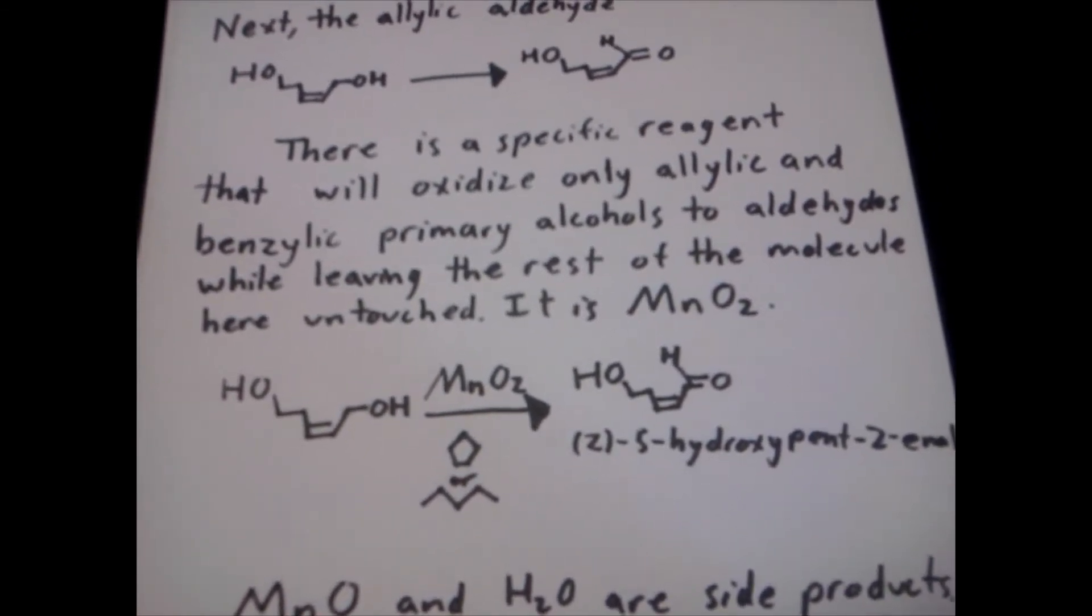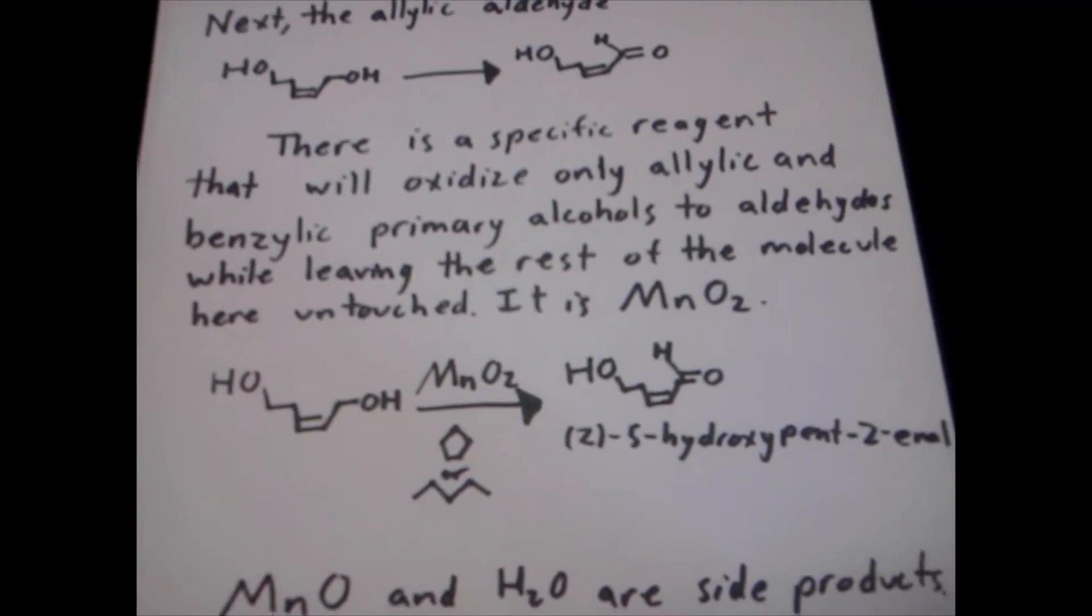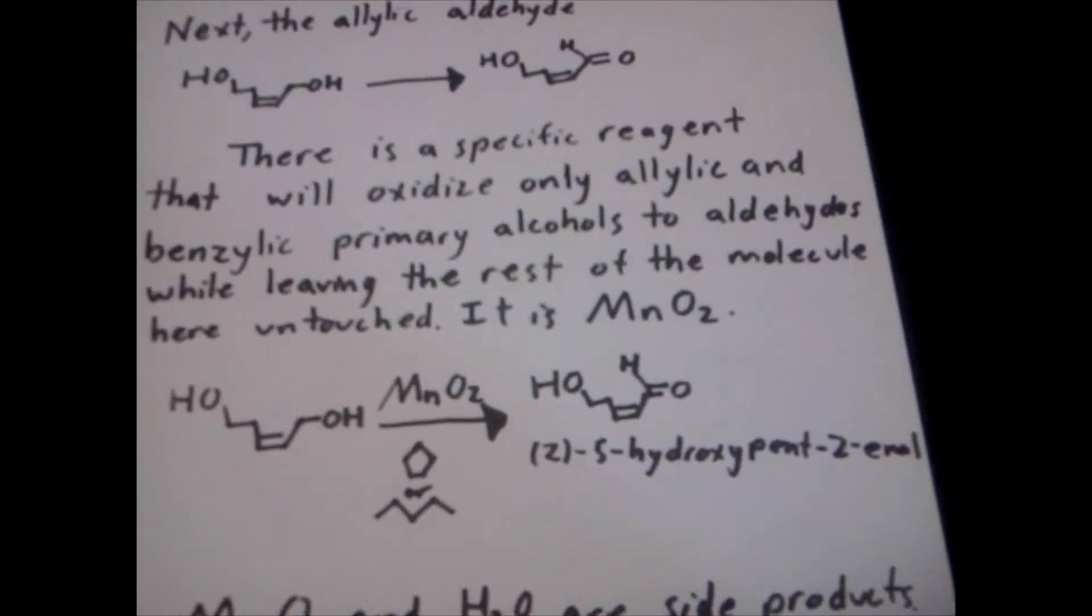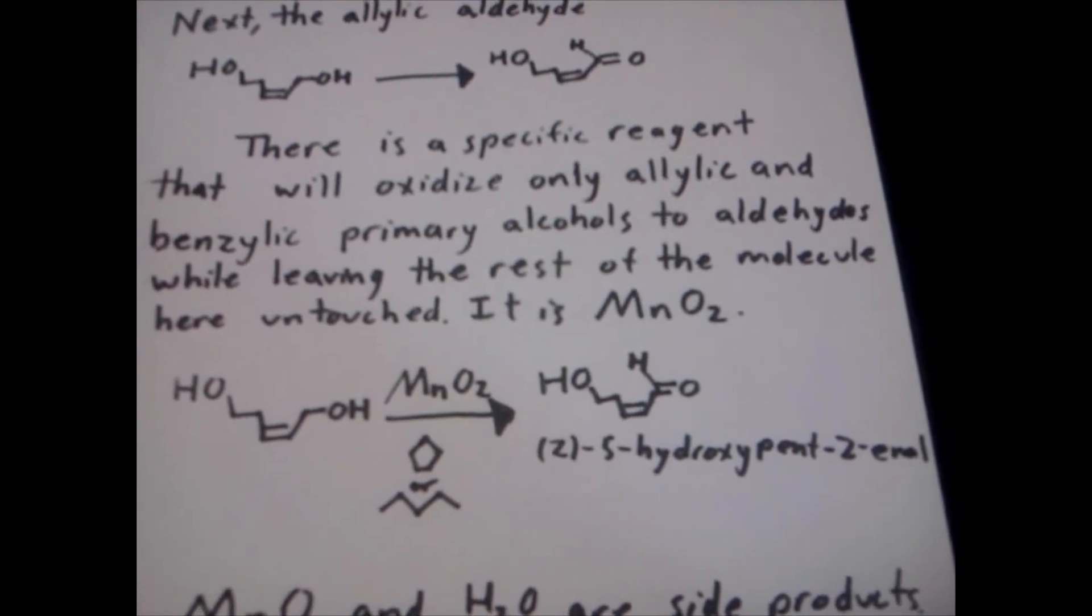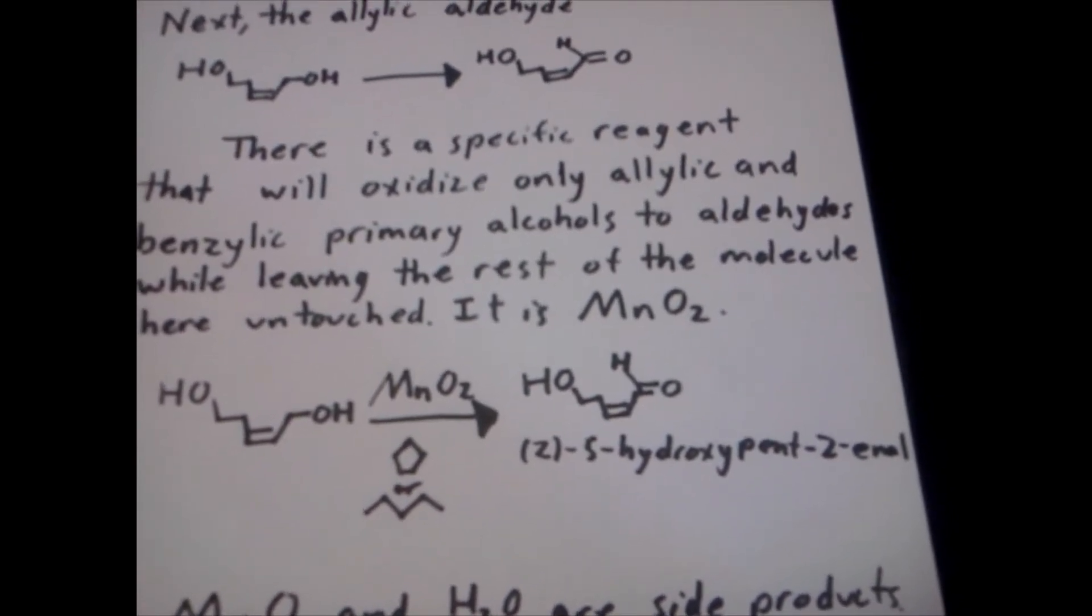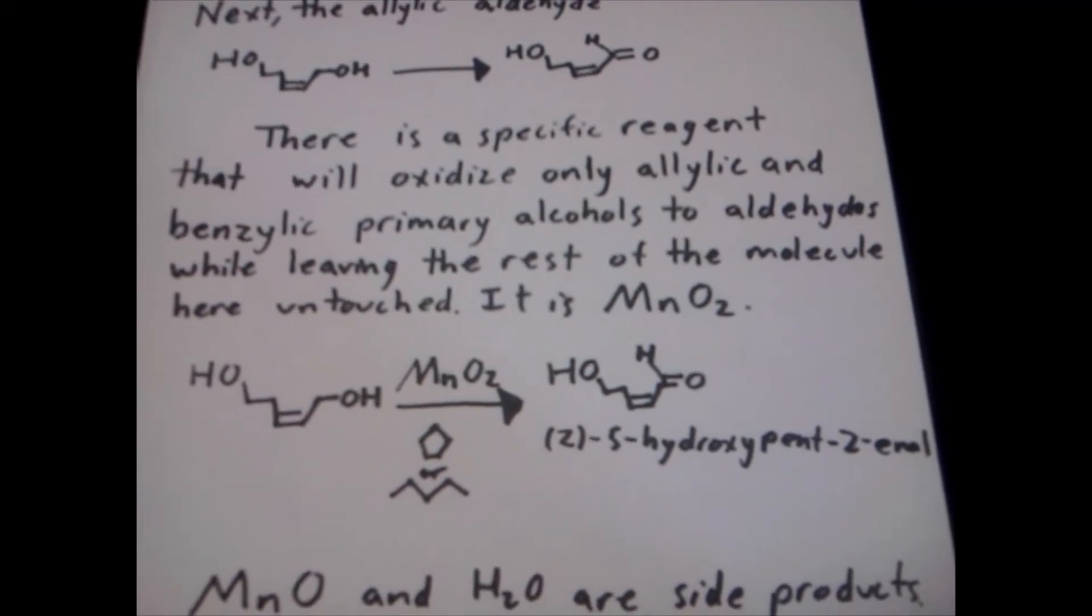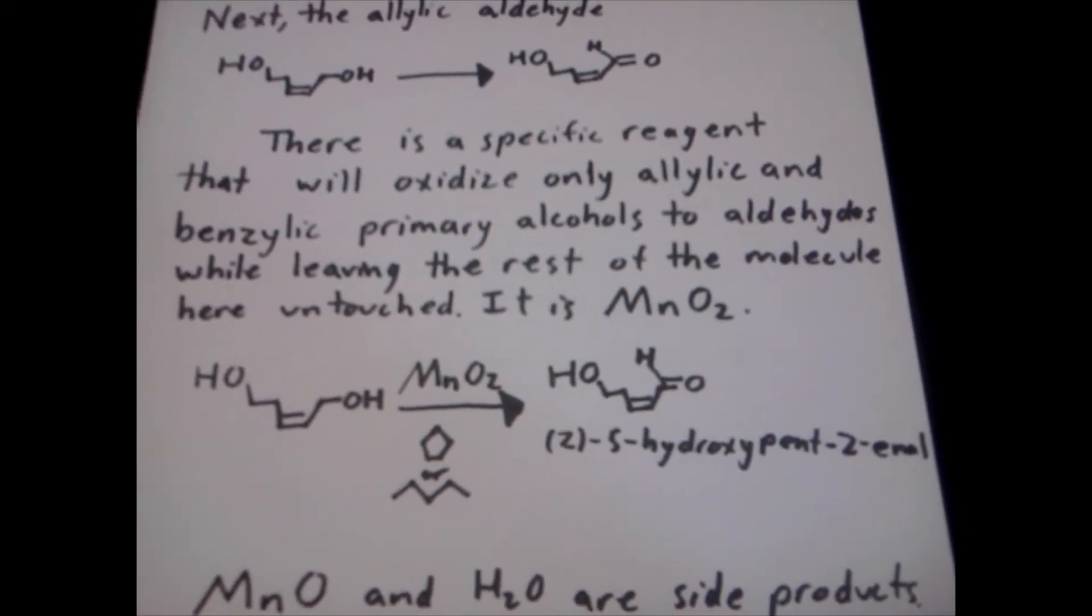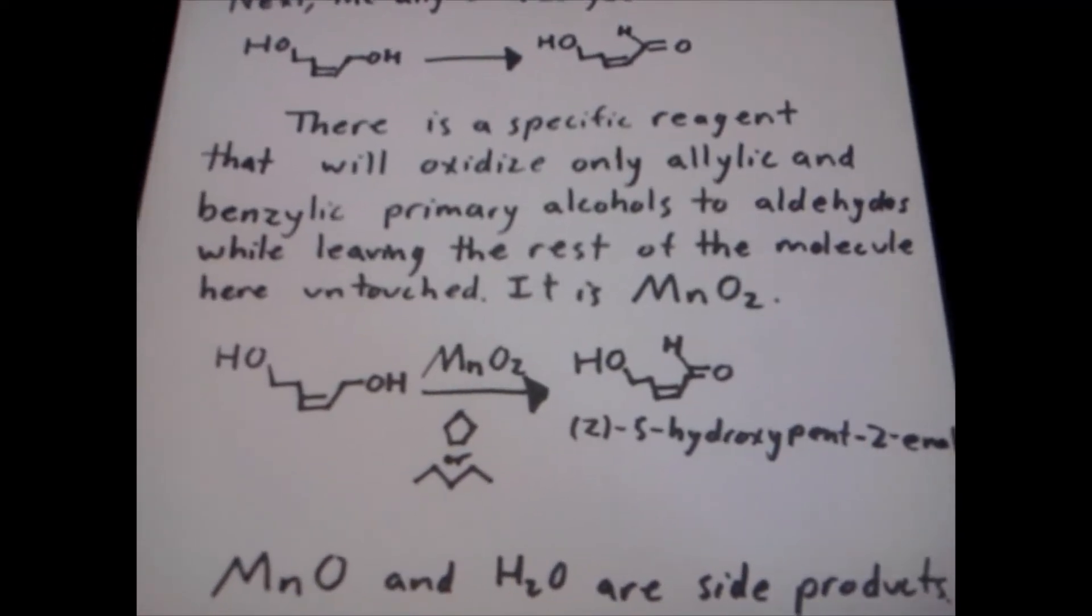Taking our starting reactant and exposing it to manganese dioxide in an organic solvent will yield to us both Z and E 5-hydroxy-pent-2-enal. The reason I only drew the Z one was because I'm trying to save some paper. I'm one of those green chemists that doesn't like using chromium reagents and doesn't like wasting tons and tons of paper making a video.